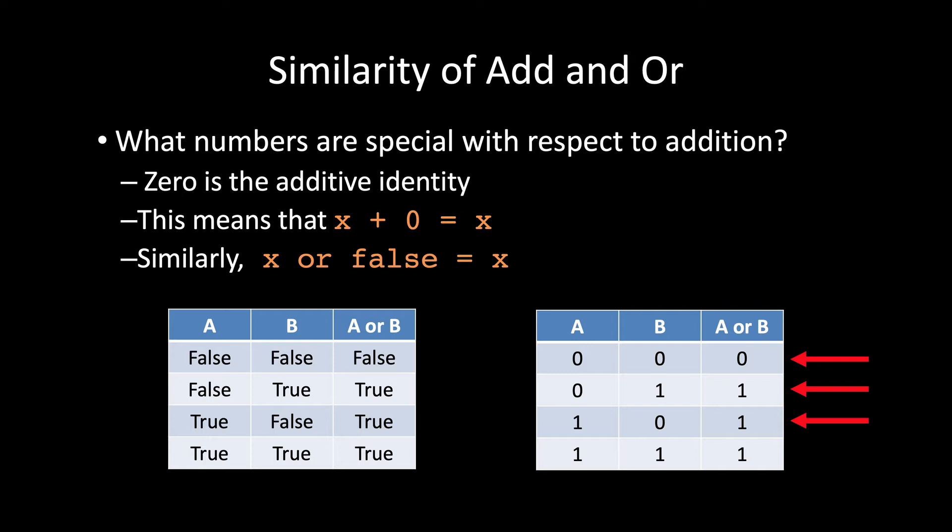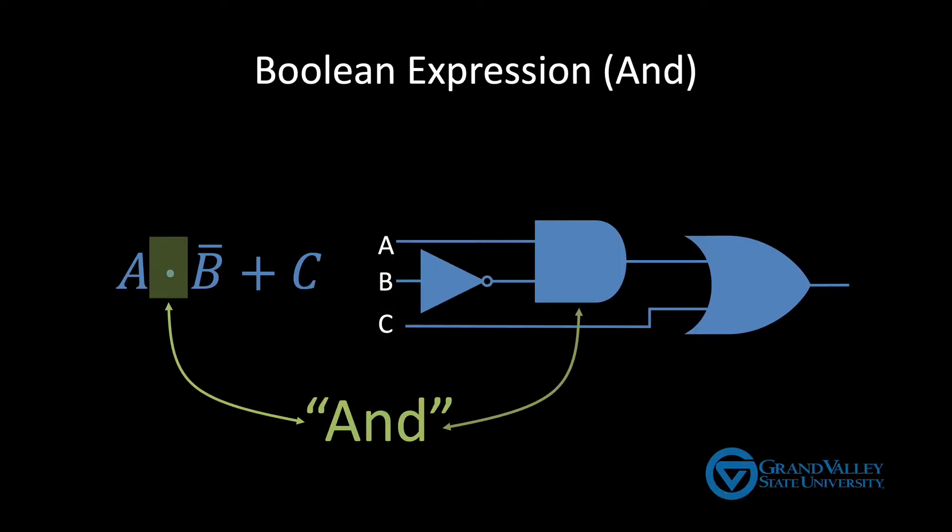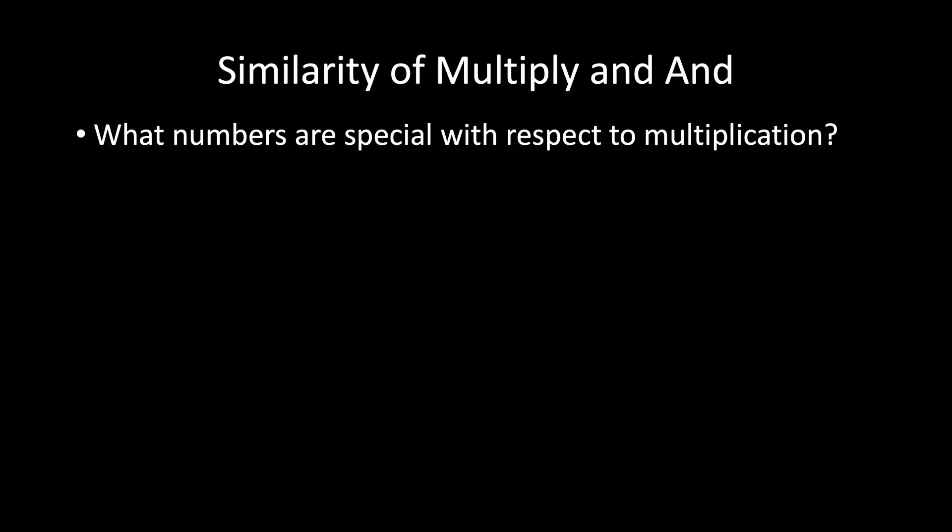As you might have guessed, the dot means and. This is the same dot you might use in an algebra course to indicate multiplication. To see why we equate and with multiplication, let's again ask what numbers are special with respect to multiplication.